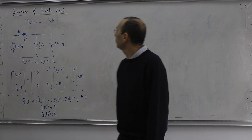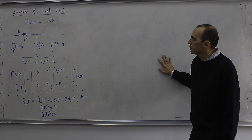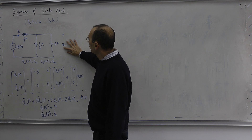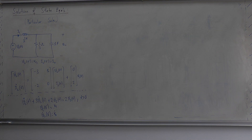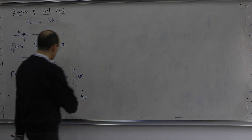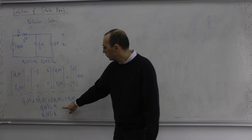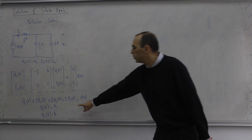We are continuing with the discussion of particular solutions for the state equation system. Last time we covered this example — a second order circuit with two dynamic components — which can be represented in the state equation form. Equivalently, you can represent it in a scalar differential equation form in terms of the representation variable vc.